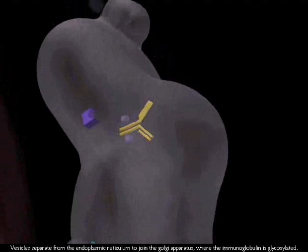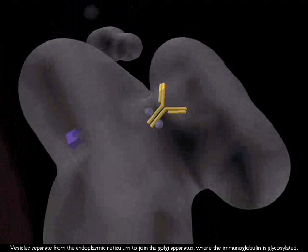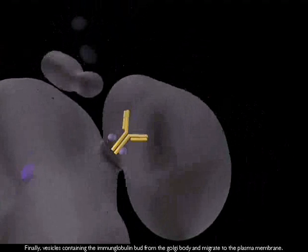Vesicles separate from the endoplasmic reticulum to join the Golgi apparatus, where the immunoglobulin is glycosylated.